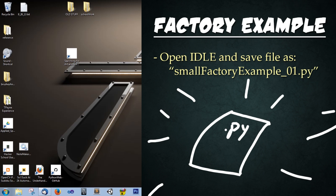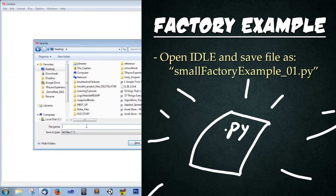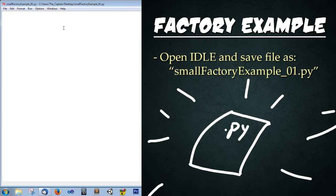So for now, let's crack open IDLE and start with an example. I'm going to go ahead and save this file on the desktop and call it small_factory_example_01.py. Okay, and save it.